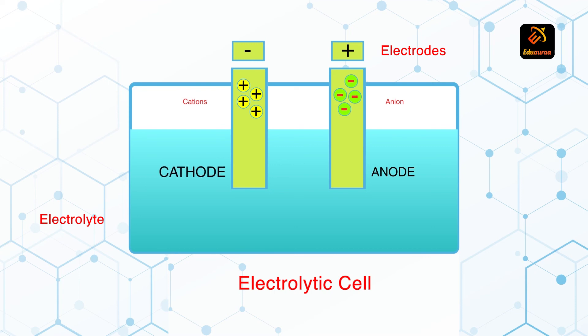Because cations go to the cathode, which are positive. In case of anode, current enters into the electrolyte through the anode.